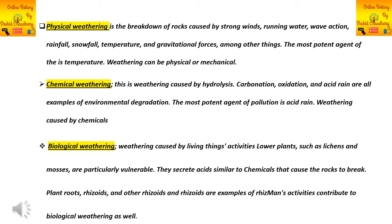The third important type is biological weathering, which is caused by living things — particularly the activities of lower plants such as lichens and mosses. These organisms secrete substances similar to chemicals that cause rocks to break down. Plant roots and rhizoids are also involved in biological weathering.